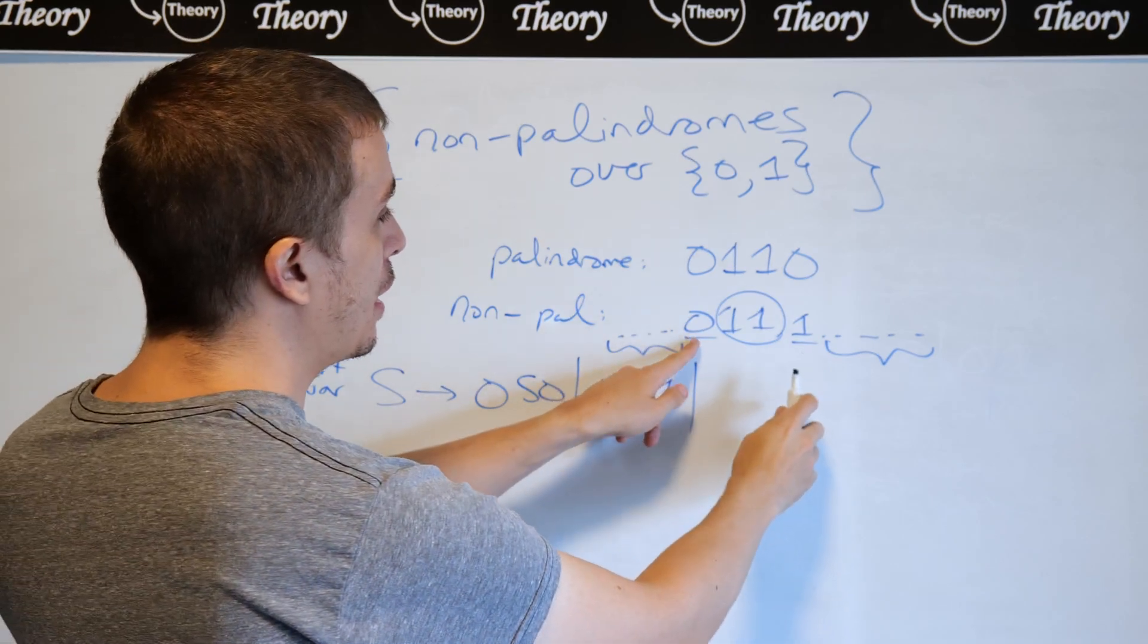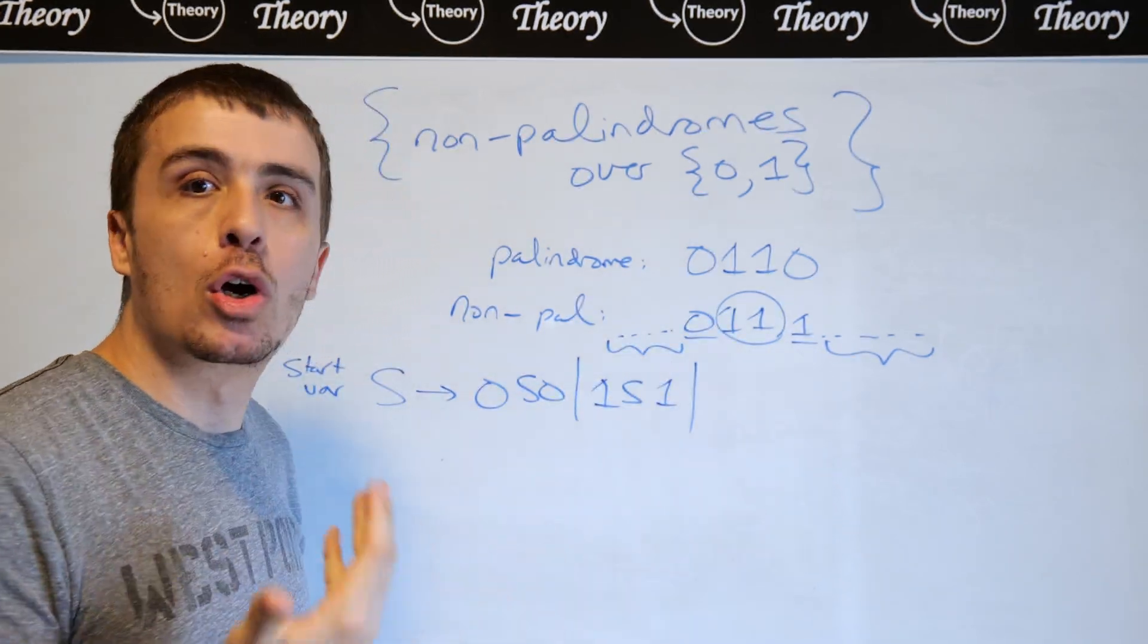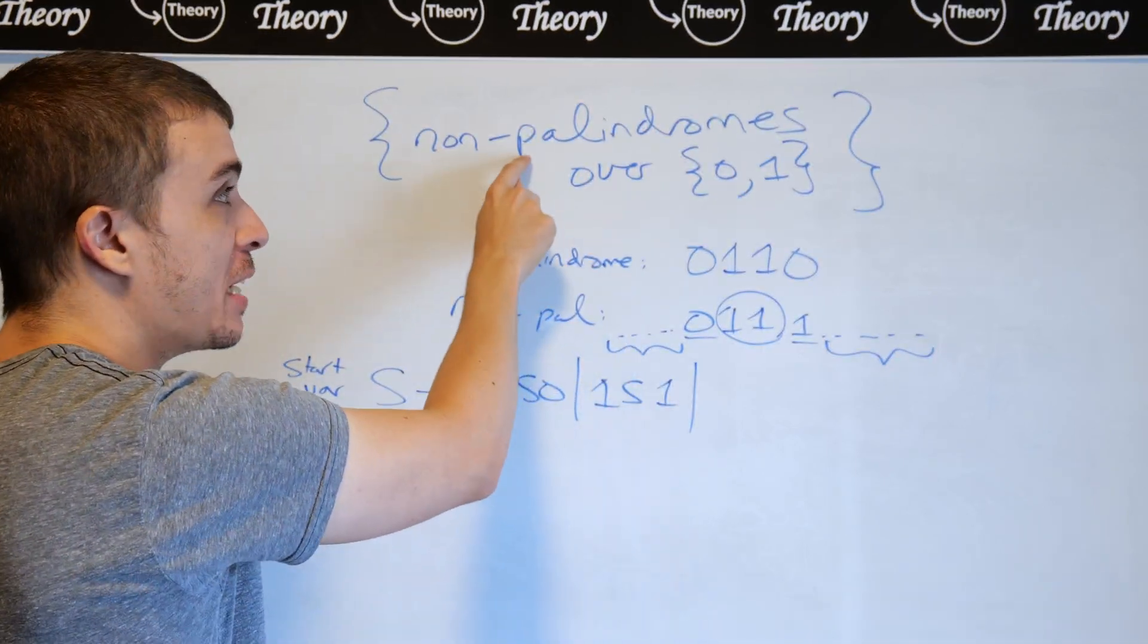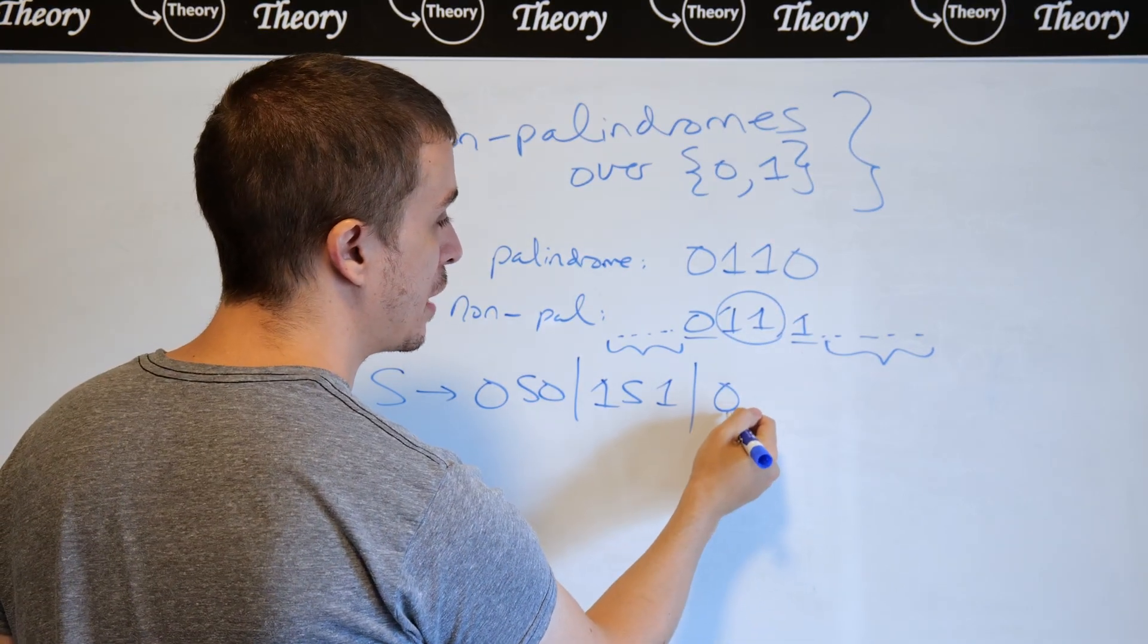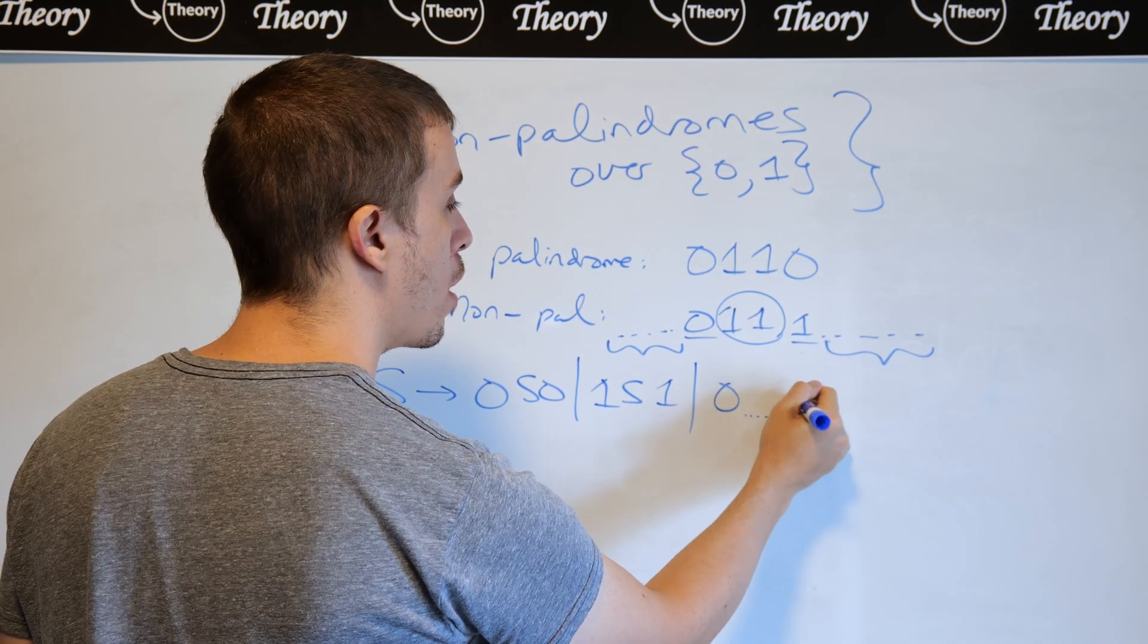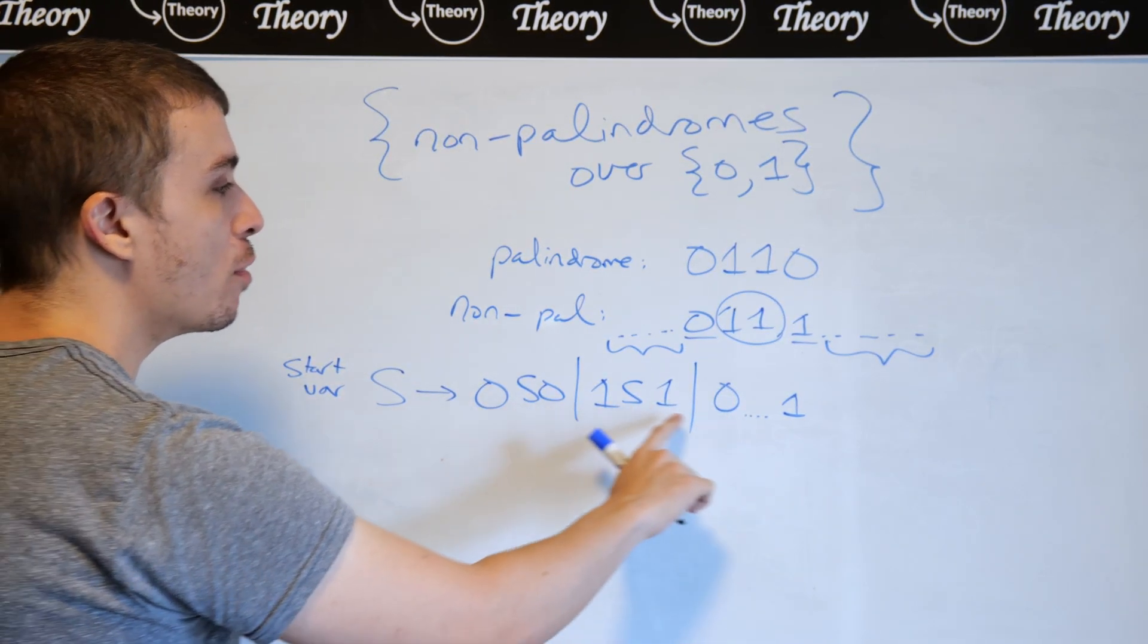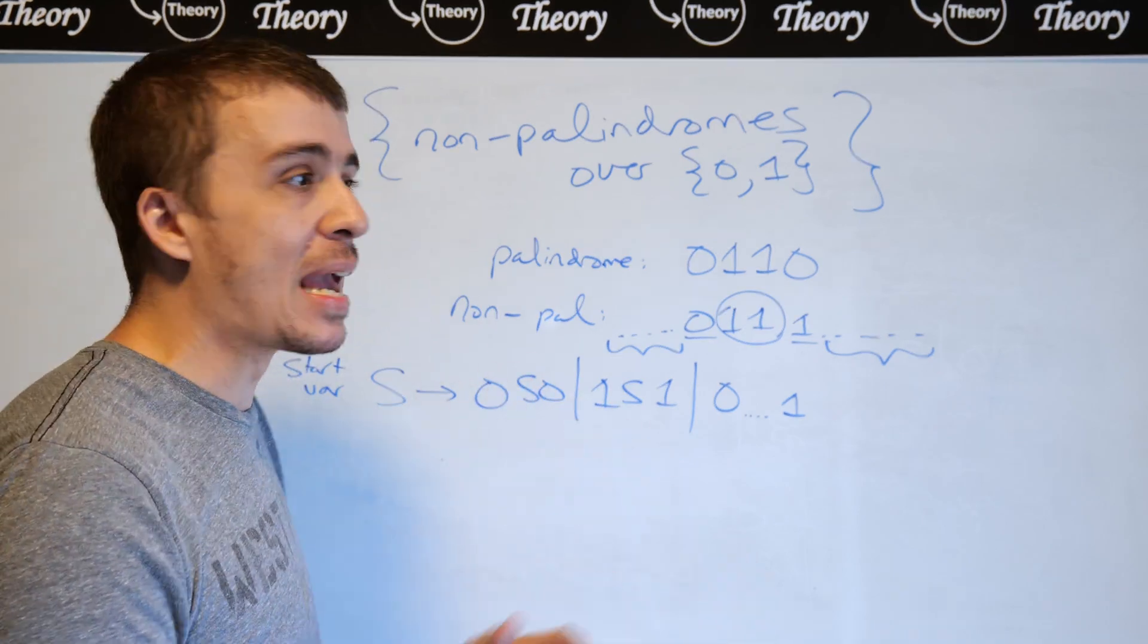But if we want to generate a 0 and a 1 or a 10, then that will correspond to a bad behavior, which is what we want in this particular language because it's non-palindromes. If we want to apply a rule with a 0 on the front and a 1 on the end, I can't go back here because then that would imply that this was a not-yet-okay behavior.